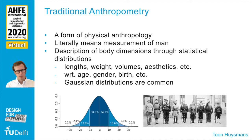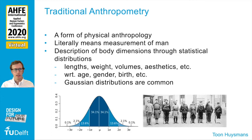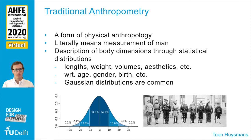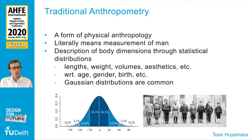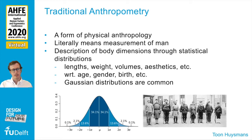I'll start with an introduction to anthropometry. Anthropometry is a form of physical anthropology — it literally means the measurement of men and their description. It's the science that describes human body dimensions and their variations through statistics. Typically we think about weight, length, stature, and volumes. This is often reported with respect to categories like age range, gender, or birth. Gaussian distributions are commonly used, and that is why we often report a specific anthropometric measure as an average with a standard deviation.